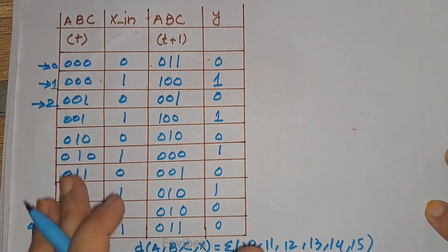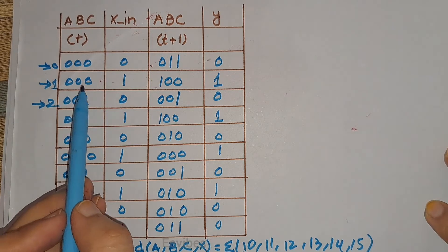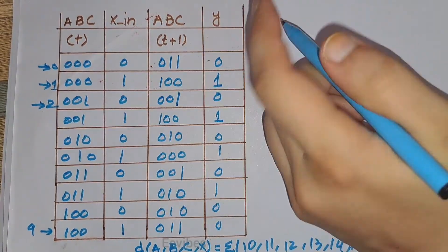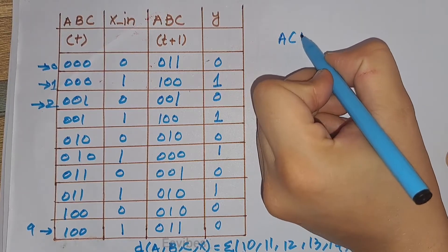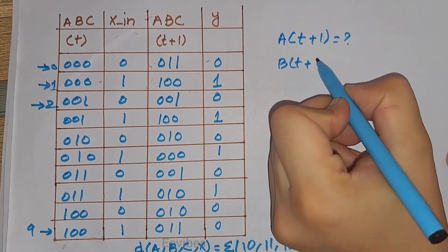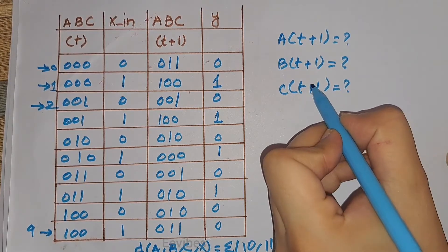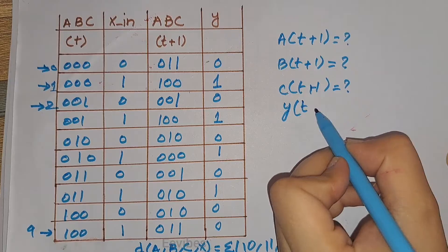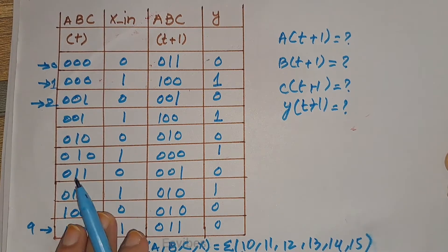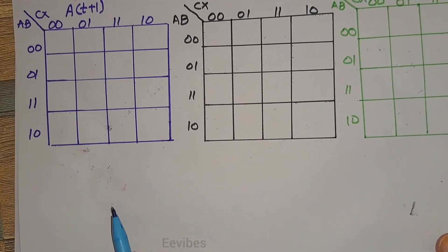Here is the complete state table for this particular problem with all states filled in. The next step is to determine the output function for each state given the input and present state. We are interested in determining A(t+1), B(t+1), C(t+1), and Y(t). To find the output function expressions we use the Karnaugh map, and I have already drawn the K-maps for each output.